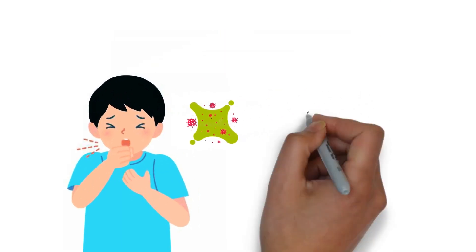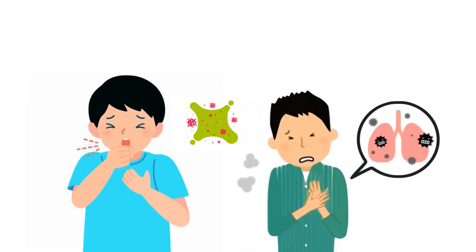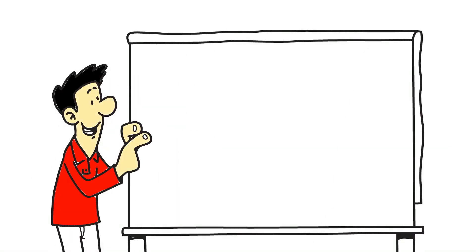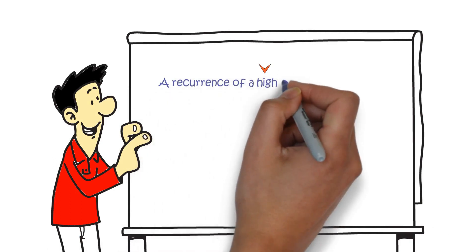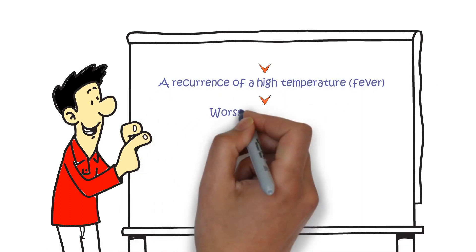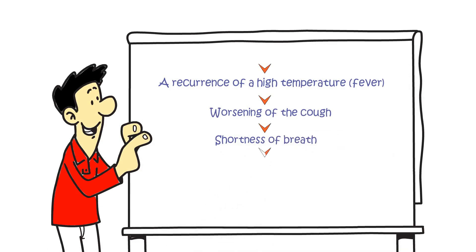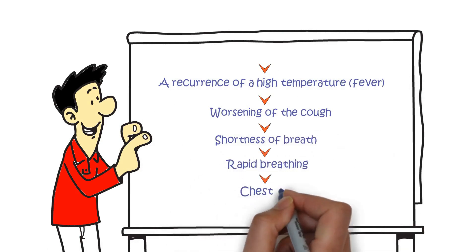Symptoms to watch for that may indicate a secondary chest infection include a recurrence of a high temperature, fever, worsening of the cough, shortness of breath, rapid breathing, chest pain.